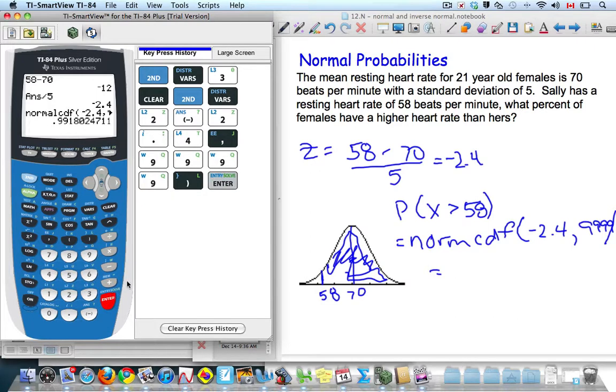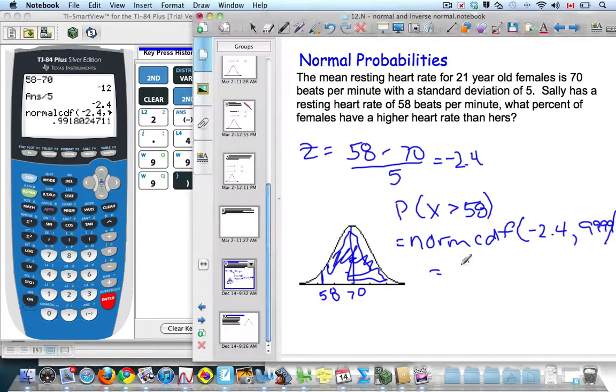Enter. And so that tells me 99.2. So what percent of females have a higher heart rate than hers? 99.2% of females have a higher heart rate than Sally.